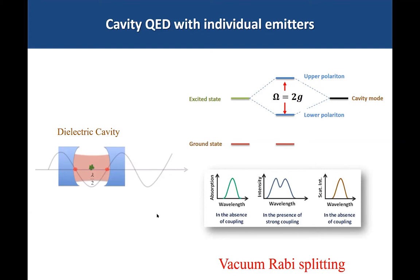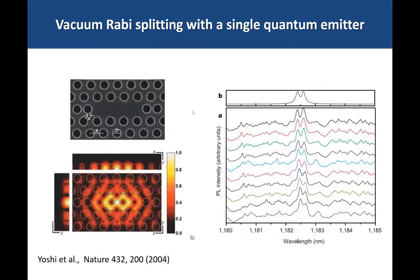A classical example from 2004 used a photonic crystal with a defect as a cavity and a semiconductor quantum dot fabricated inside it. You can see the splitting in the spectrum due to coupling between the emitter and the cavity. However, this had to be done at very low temperature for the coupling to be strong enough, and the linewidth of the spectrum is very narrow, requiring specialized narrow-linewidth lasers.